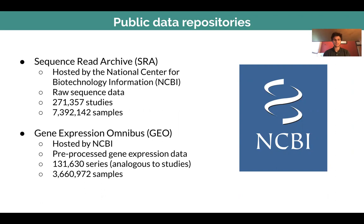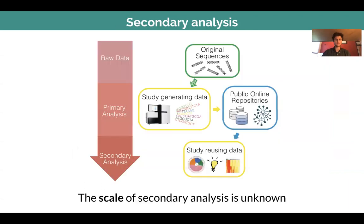Both of these repositories are very large, with hundreds of thousands of studies and millions of samples, representing a large opportunity for scientific discovery. In this project, we also talk about two different kinds of publications. A primary analysis paper generates its own sequence data and uploads it to one of these repositories, while a secondary analysis paper reuses and downloads a dataset that another group uploaded from one of these repositories.